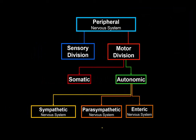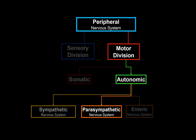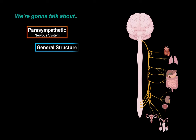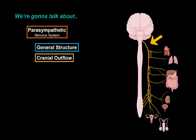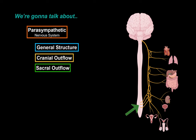I will try to simplify the parasympathetic nervous system as much as I can so that it will make sense at a detailed level within anatomy and physiology. In this video, we're going detailed into the parasympathetic nervous system by first going through the general structures and terms — basically ganglia, the pre- and post-synaptic neurons, and their neurotransmitters. Then we'll cover the cranial outflow, the cranial nerves involved and what structures they innervate, and finally run through the sacral outflow — where it originates from and what it innervates.